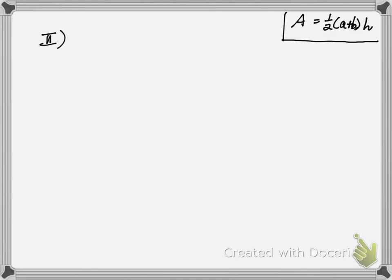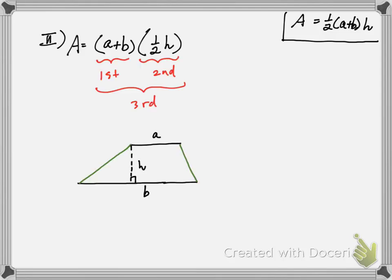For the next way to look at it, we want to take advantage of the fact that when you multiply things, you can change the order of this operation. In particular, I'm going to do a plus b first and group the half with h. By saying things this way, you're essentially looking for the area of some parallelogram with base a plus b and the height half h.